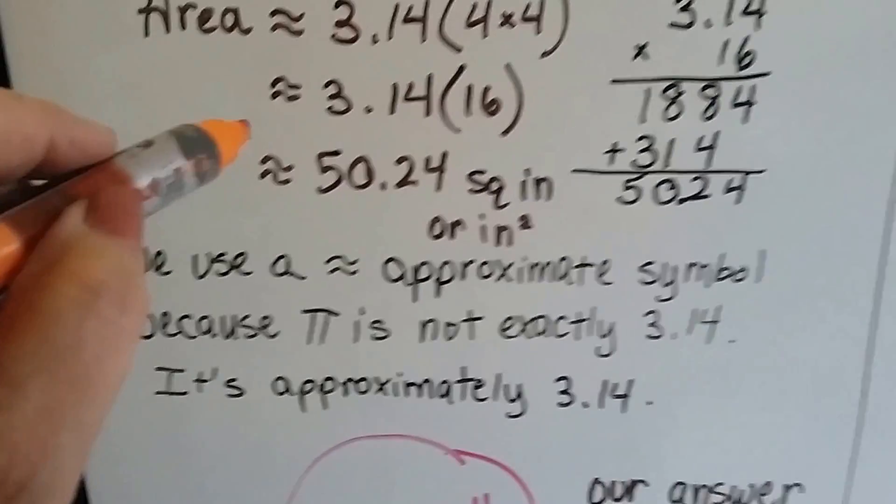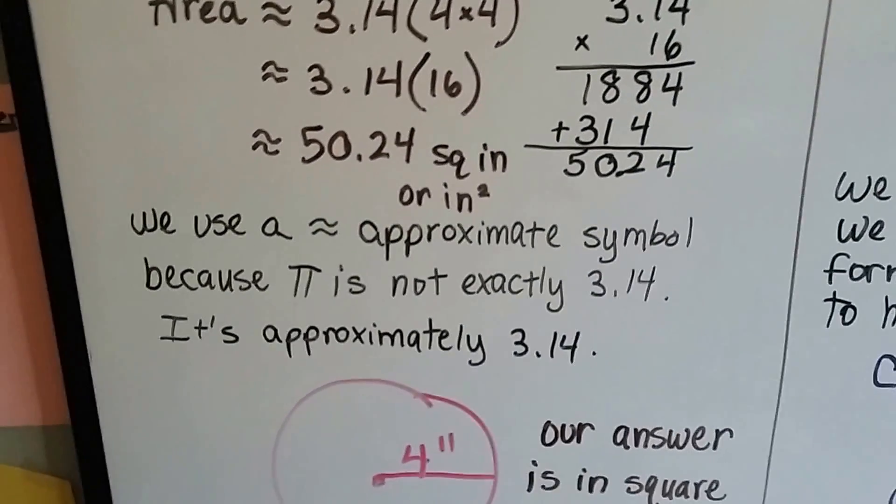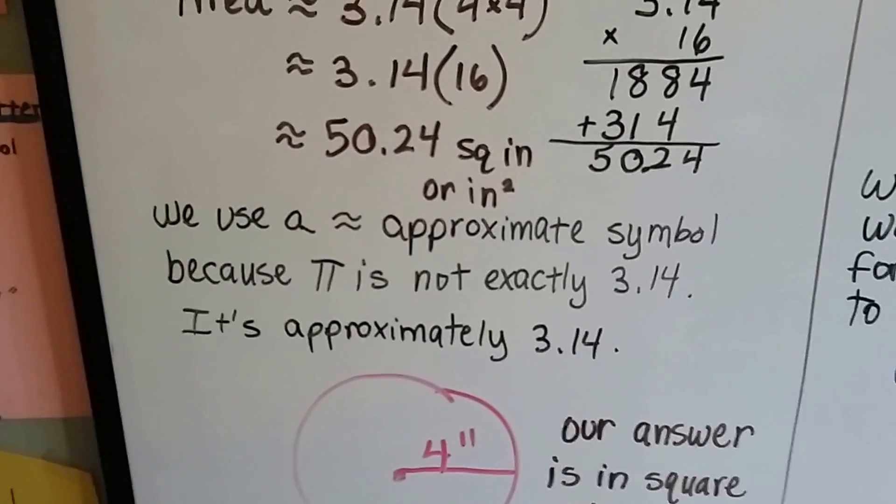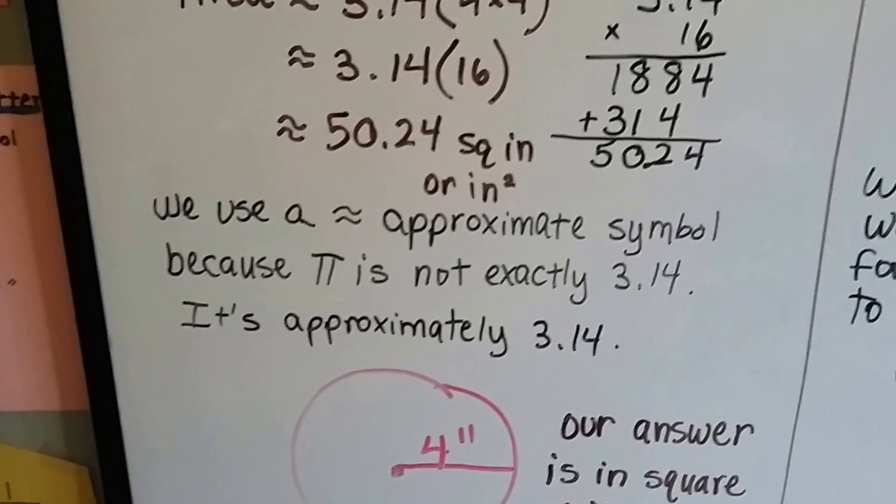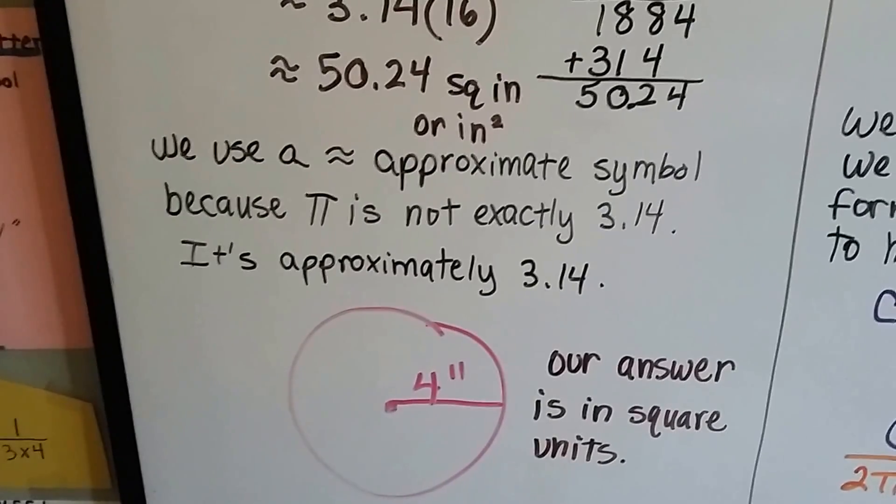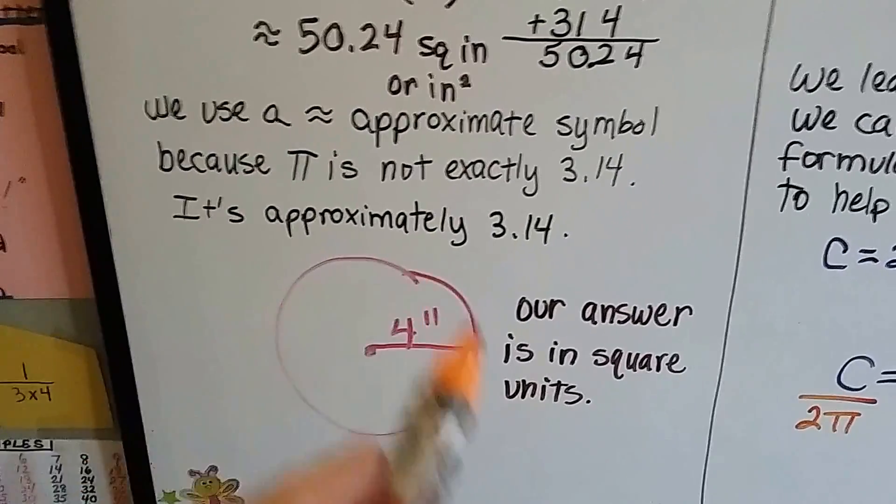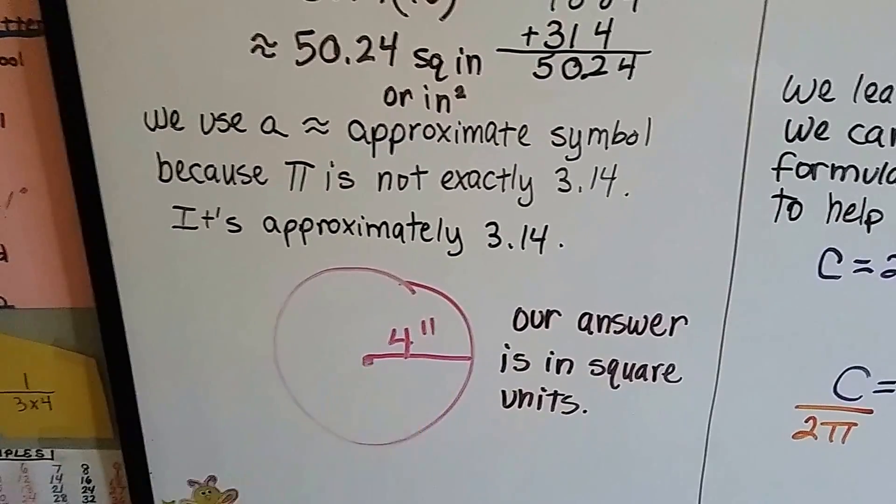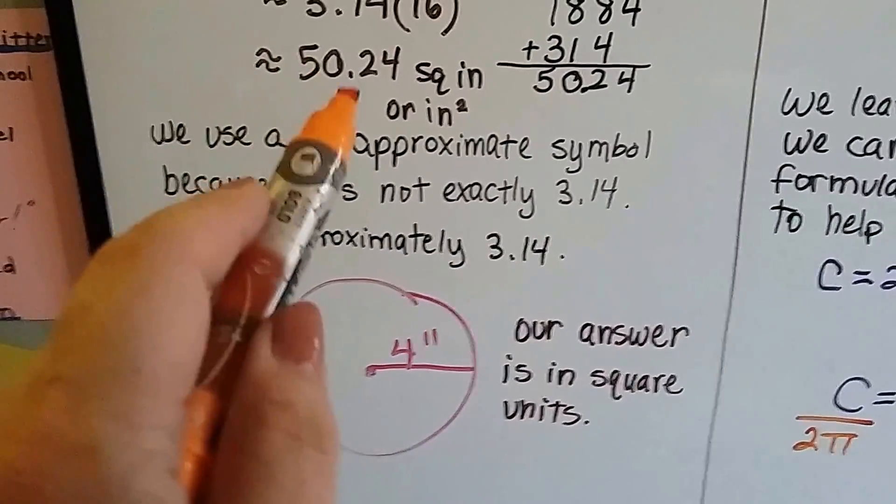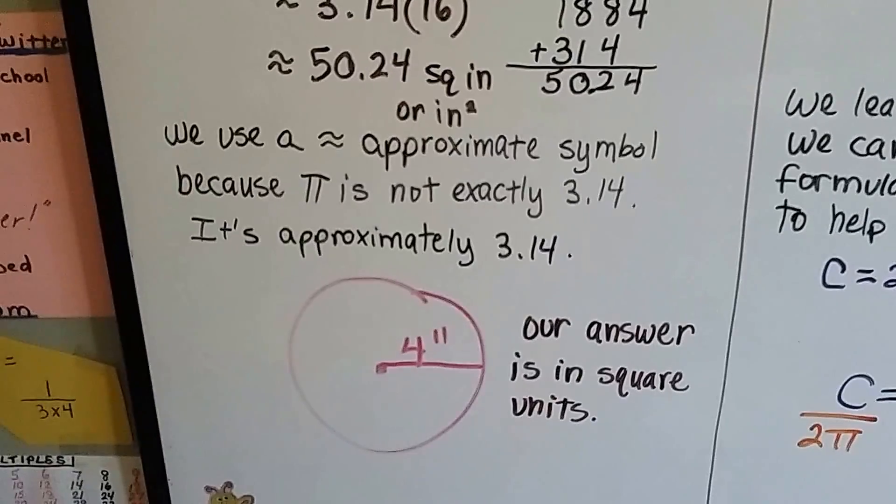We use this approximate symbol because pi is not exactly 3.14, right? It's approximately 3.14. As we said before, it's got over a million digits. So we just round it off and do 3.14. So, for a circle with a 4 inch radius, our answer is in square units and it's 50.24 square inches.